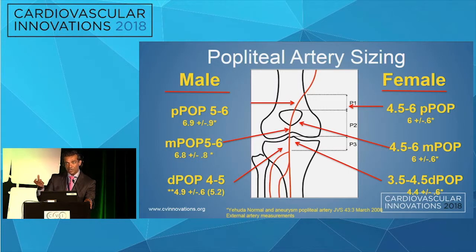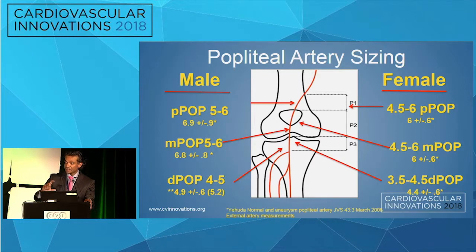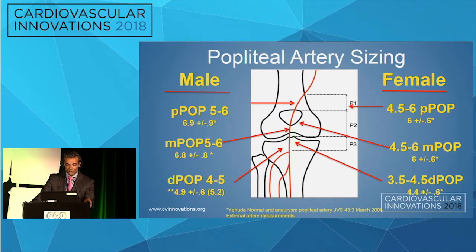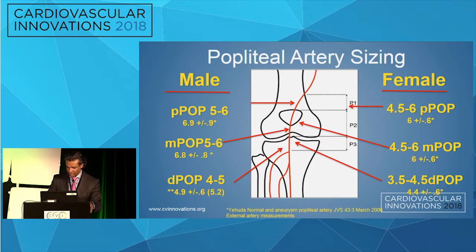As we go down into the popliteal artery it gets a little tricky. The popliteal artery has three segments — P1, P2, and P3 — with different characteristics. The popliteal stays pretty consistent until the P3 segment past the knee joint, where it really tapers down. In men, the proximal and mid popliteal arteries are between 5 to 6 millimeters, and the distal pop 4 to 5. In females, slightly smaller: 4.5 to 6 proximally, and 3.5 to 4.5 distally.